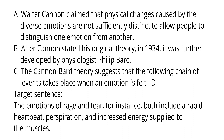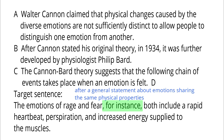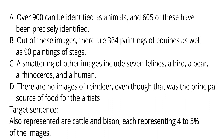The third target sentence states that two different emotions, rage and fear, share the same physical characteristics, and uses 'for instance' as the transitional phrase. So the target sentence should come after a general statement that different emotions share the same physical properties. Option A makes such a general statement — that physical changes caused by emotions cannot help people distinguish one emotion from another. The target sentence is an example supporting A, so after A is the best option. Options B and C are cohesive with each other.